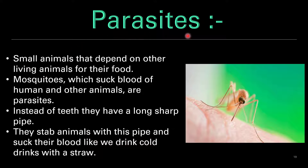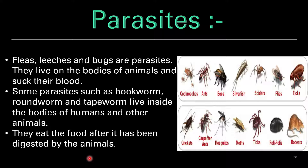Next are parasites. Small animals that depend on other living animals for their food are called parasites. For example, mosquitoes suck blood from humans and other animals. Instead of teeth, they have a long sharp tube — they stab animals with this tube and suck their blood, like we drink cold drink with a straw. Flies, leeches and ticks are also parasites that live on the bodies of animals and suck their blood. Some parasites such as hookworm, roundworm and tapeworm live inside the bodies of humans and other animals and eat the food after it has been digested.